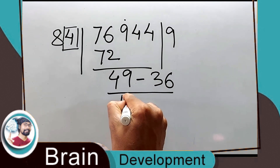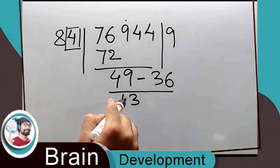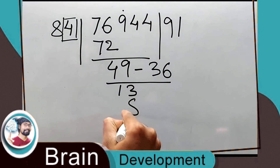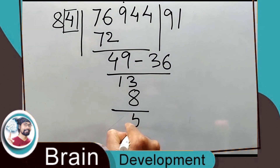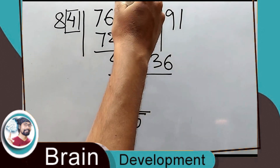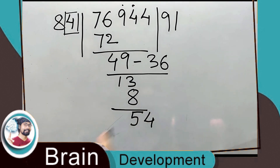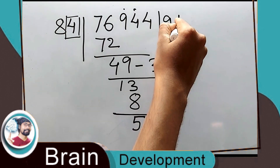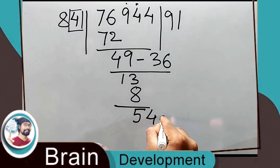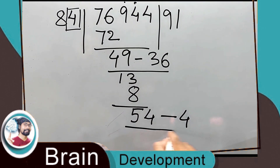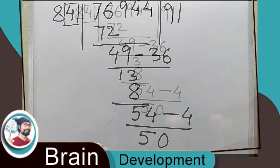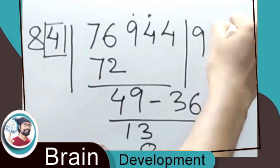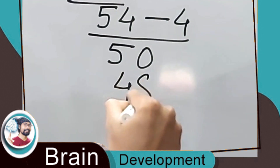49 minus 36. Now again we have to divide by 8, so eight ones are 8. Now this 4 will come down, so it's 54. We know the process — we have to use this 4. Four into one is 4, so 54 minus 4 is 50. Again divide this 50 by 8 — eight sixes are 48.